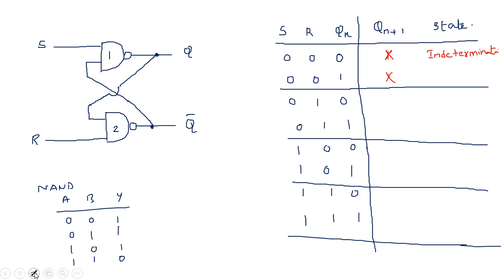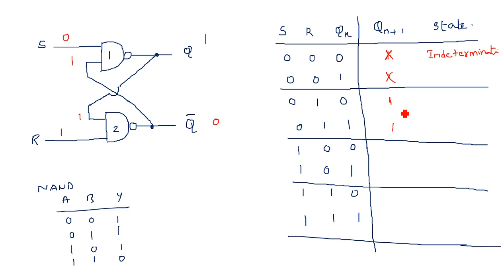When S is equal to 0 and R is equal to 1, and previous state Qn is 0: Q-bar=1, so first NAND gate inputs are S=0 and Q-bar=1, output is 1. This 1 comes to the second gate along with R=1, giving output 0. That 0 feeds back — inputs are 1 and 0, which gives output 1. The outputs are complementary, so this is a valid state. Since R=1 normally resets but this is active low, setting operation is performed — output is set to logic high 1.